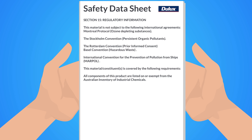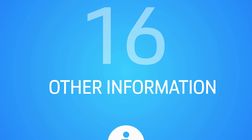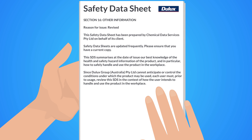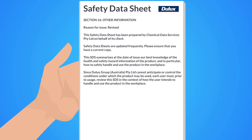In Section 15, we find information such as international or national regulatory details. The final section provides any other information relevant to the preparation of the SDS, including the date of its preparation, a key or legend to abbreviations, acronyms, and references used.